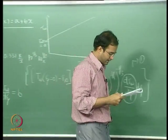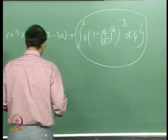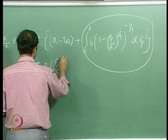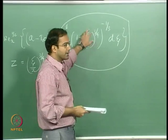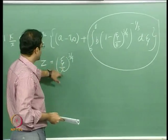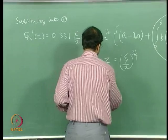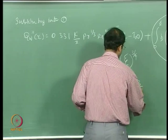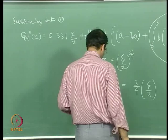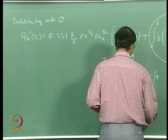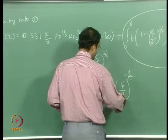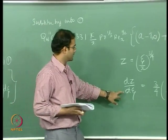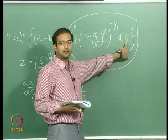To evaluate the integral, we introduce a variable substitution: Z = (ζ/x)^(3/4). Then dZ/dζ = (3/4) × (ζ/x)^(3/4 − 1) × (1/x), which simplifies. This transforms the variables from the ζ-plane to the Z-plane.